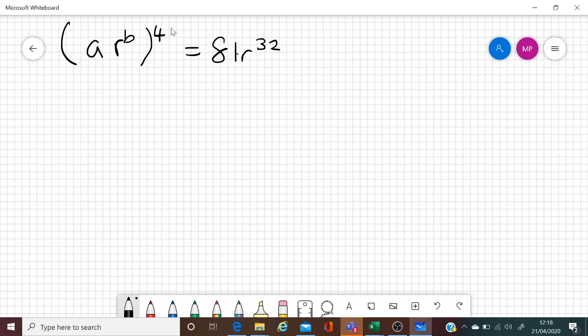On the right hand side you have R to the power of 32, and on the left hand side you've got R to the power of B inside the bracket and to the power of 4 outside the bracket. Now what you should know is that whenever you've got a power inside a bracket and a power outside a bracket, to expand it you multiply the powers.